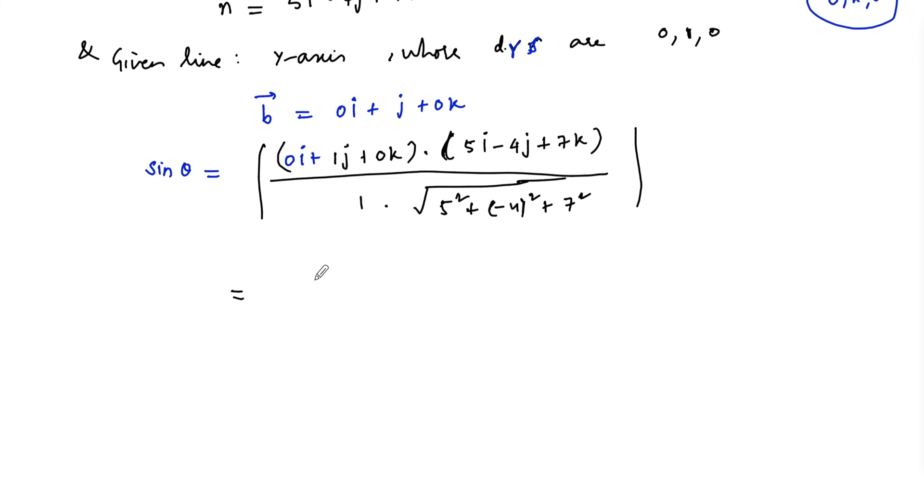Upon simplifying, it is 1 into -4, which is negative 4, remaining 0, upon root of 7 squared 49 plus 16 plus 25, which is 90. So we're getting square root of 90.